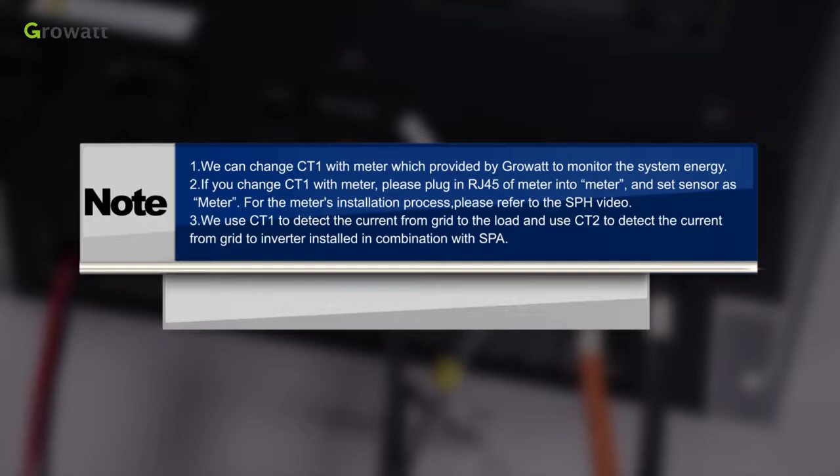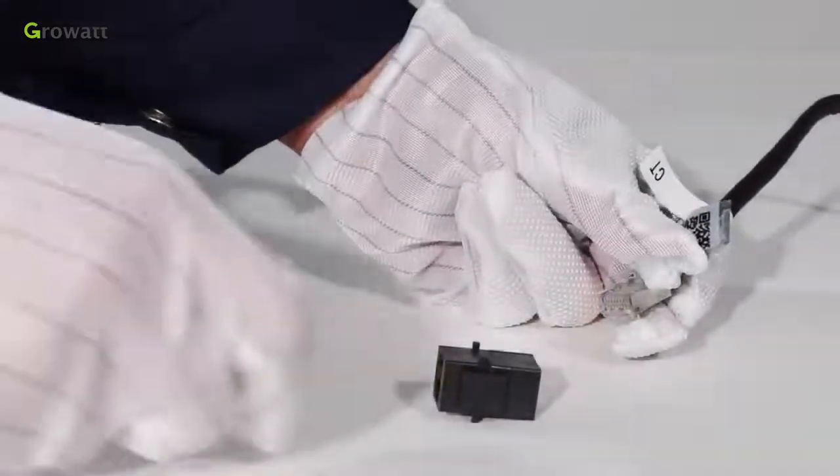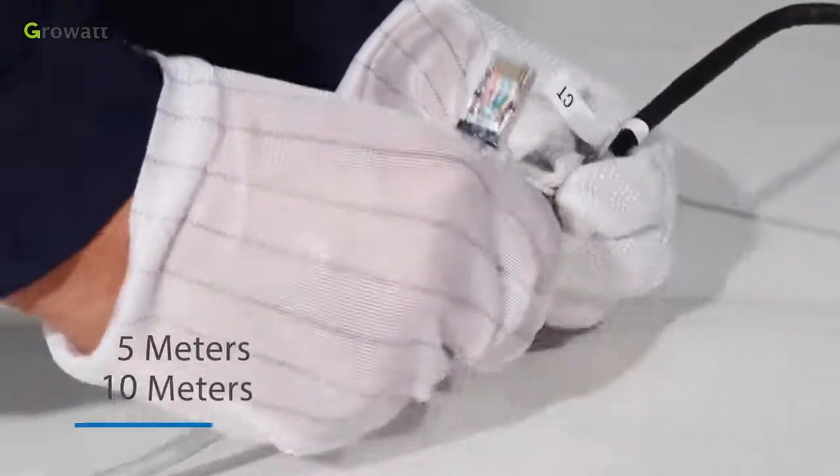Note 1. We can change CT1 with meter which provided by GrowWatt to monitor the system energy. 2. If you change CT1 with meter, please plug in RJ45 for meter into meter and set sensor as meter. For the meter's installation process, please refer to the SPH video. 3. We use CT1 to detect the current from grid to the load and use CT2 to detect the current from grid to inverter installed in combination with SPA. 4. GrowWatt provides two cables whose length is 5m and 10m.